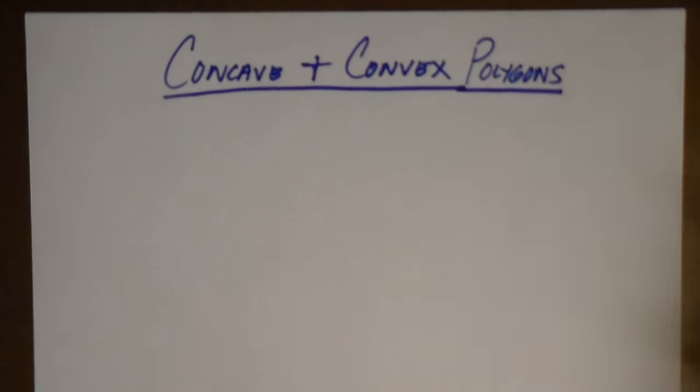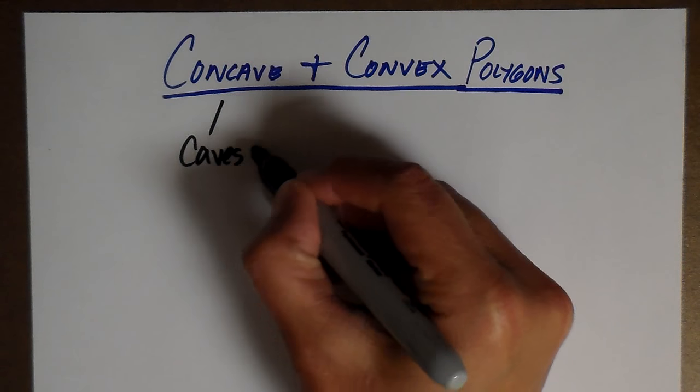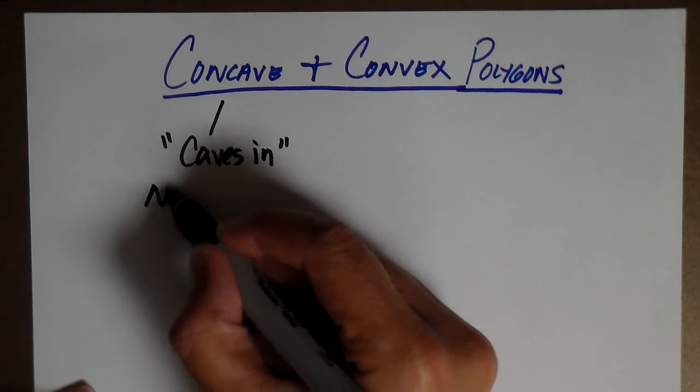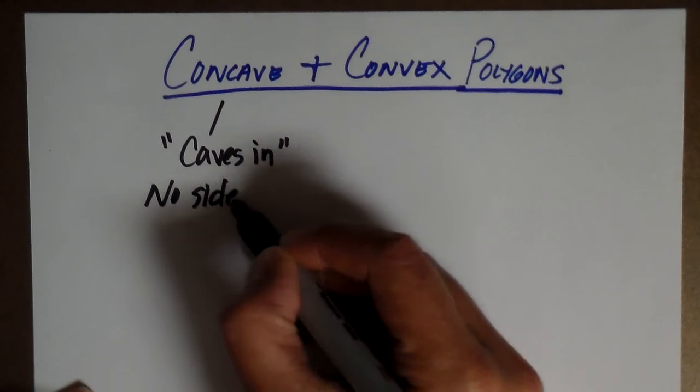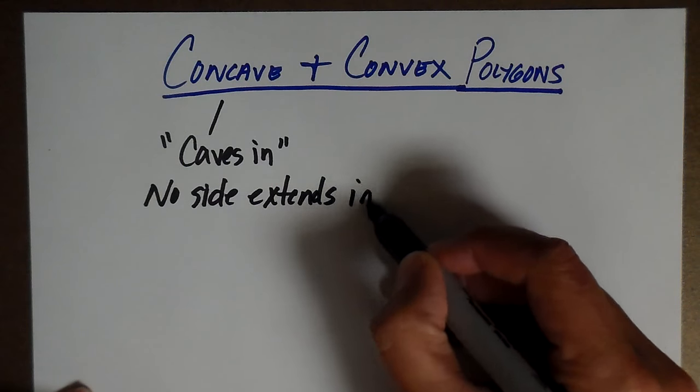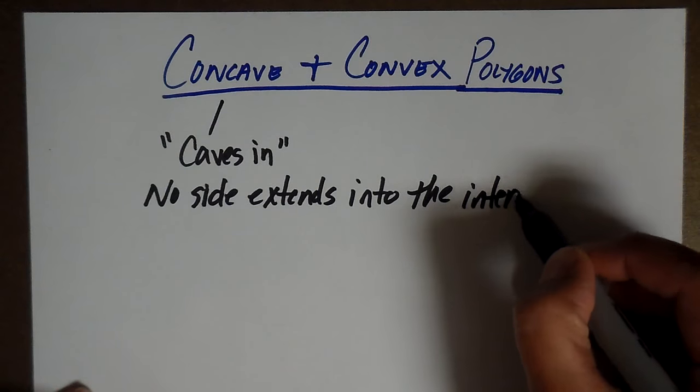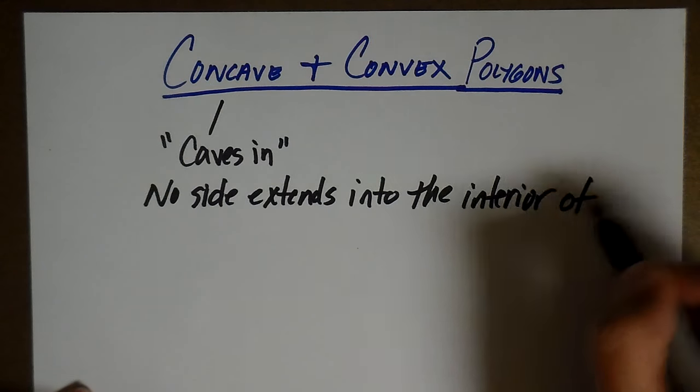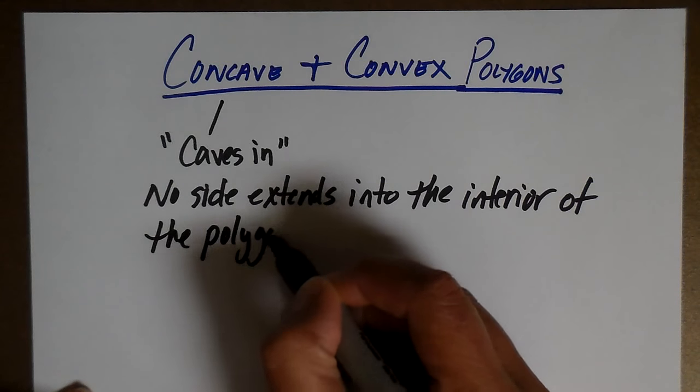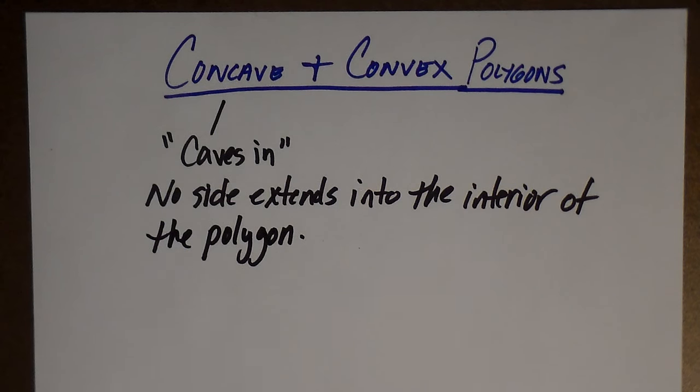A concave polygon is a polygon that kind of caves in. And basically what a concave polygon is, is no side extends into the interior of the polygon. Now, what the heck does that mean? So no side extends into the interior of the polygon.